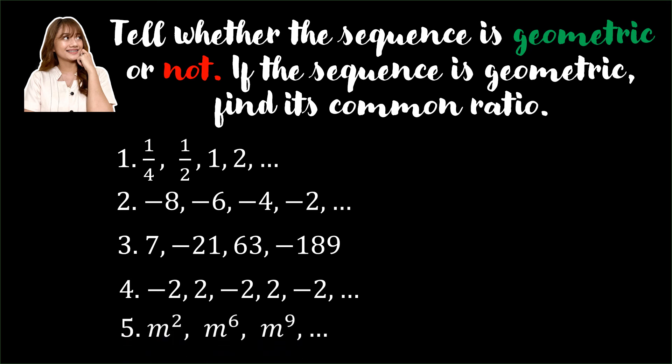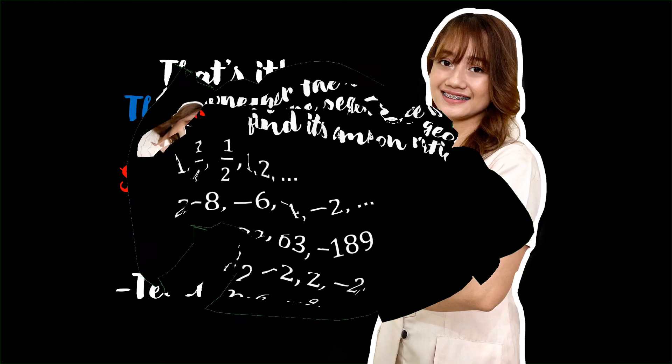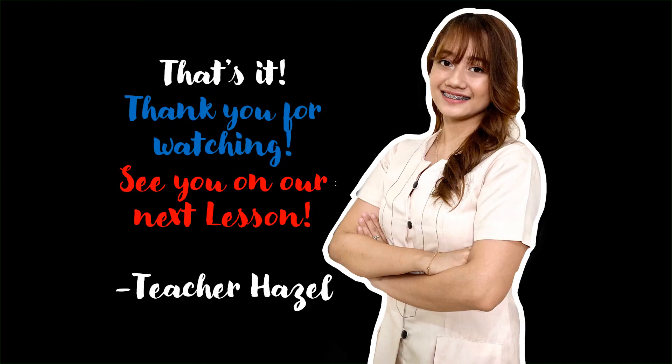Number 5: We have M squared, M raised to 6, M raised to 9, and so on. Is the given sequence geometric? If so, what is the common ratio? That's it! I hope you learned something. Thank you for watching, and I will see you on our next lesson. Bye!